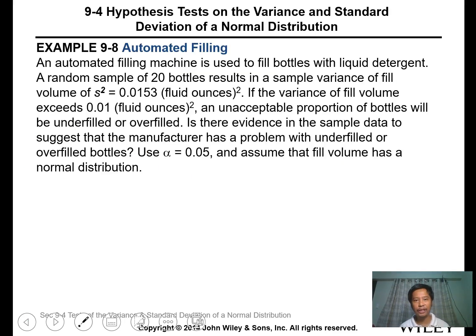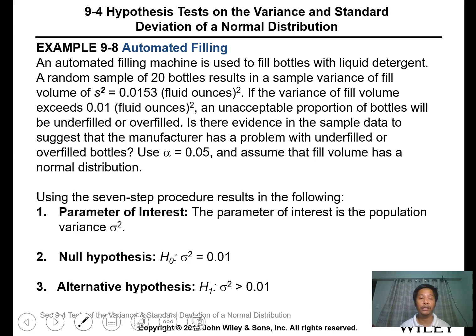Let's have this example. An automated filling machine is used to fill bottles with liquid detergent. A random sample of 20 bottles results in a sample variance of 0.0153. If the variance of fill volume exceeds 0.01, an unacceptable proportion of bottles will be underfilled or overfilled. Is there evidence in the sample data to suggest the manufacturer has a problem? Use alpha equals 0.05 and assume fill volume has a normal distribution.